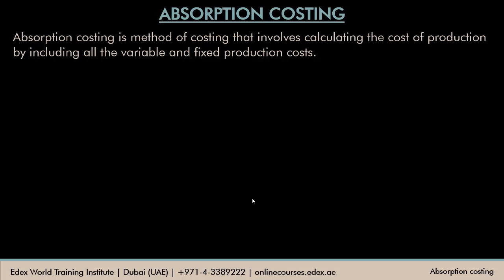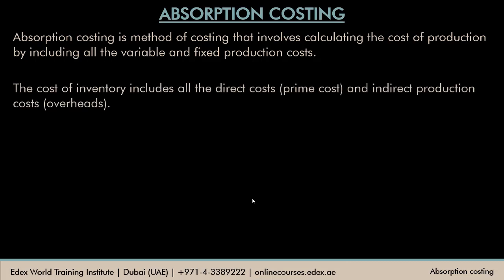Details about marginal costing we will study in later videos. The cost of inventory includes all the direct and indirect costs of production. If you remember from IGCSE accounting, when preparing the manufacturing account you had the prime cost — the total of direct material, direct labor, and other direct expenses — and on the other side the indirect costs: indirect material, indirect labor, and all other indirect costs. In absorption costing, all these costs related to production are considered as cost of inventory.